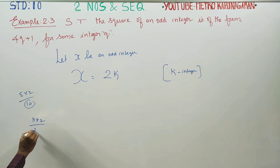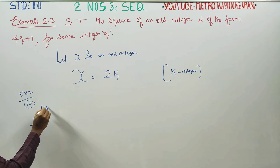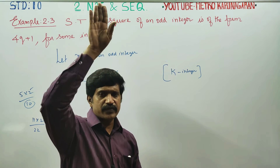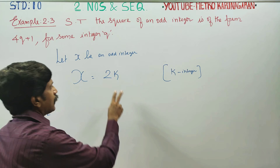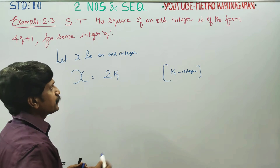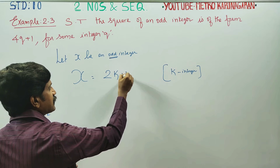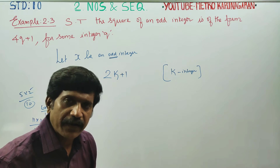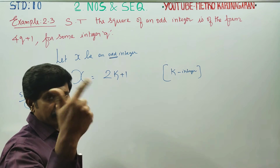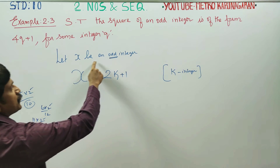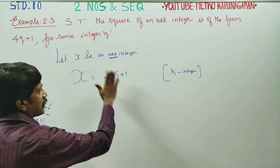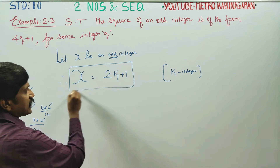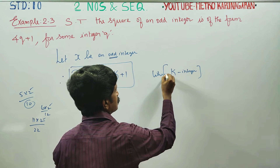11 into 2 gives 22, which is an even number. 6 into 2 gives 12, which is an even number. Any number in the 2 times table is an even number.